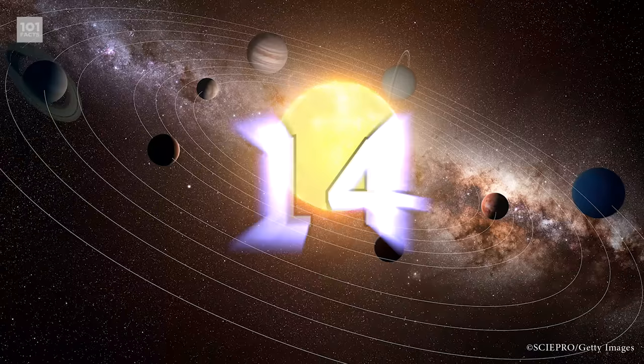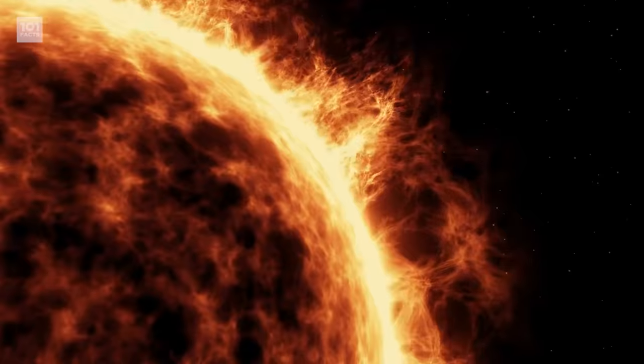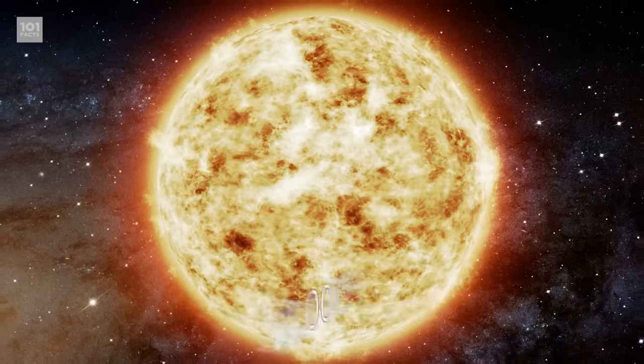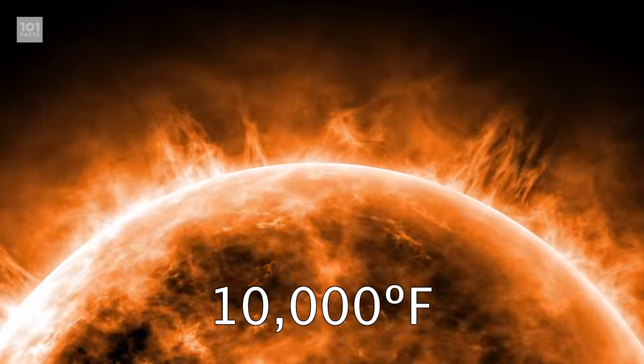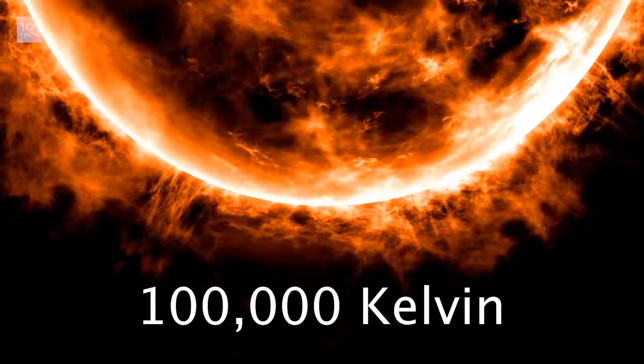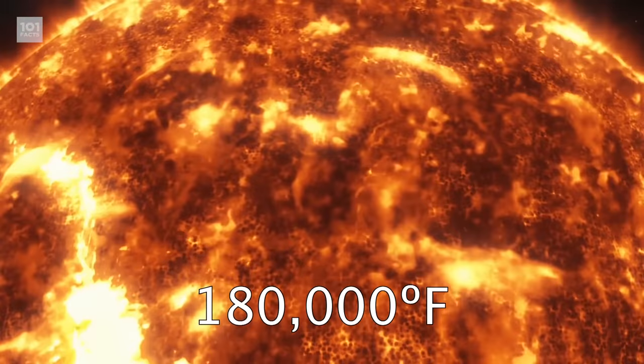The sun is hot. The surface of the sun actually isn't as hot as its atmosphere. The surface measures around 6,000 Kelvin, or 10,000 degrees Fahrenheit. The atmosphere, though, scorches at 100,000 Kelvin, which is the equivalent to around 180,000 degrees Fahrenheit.